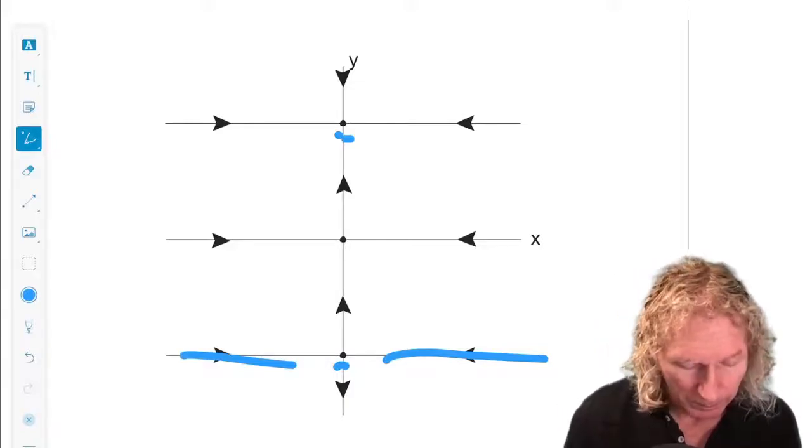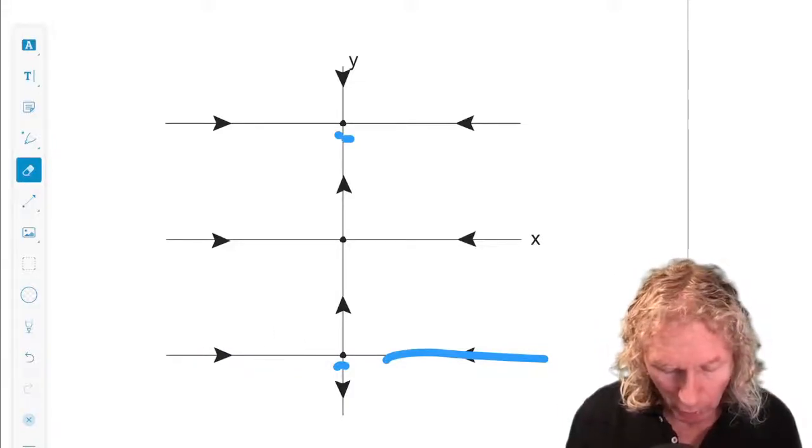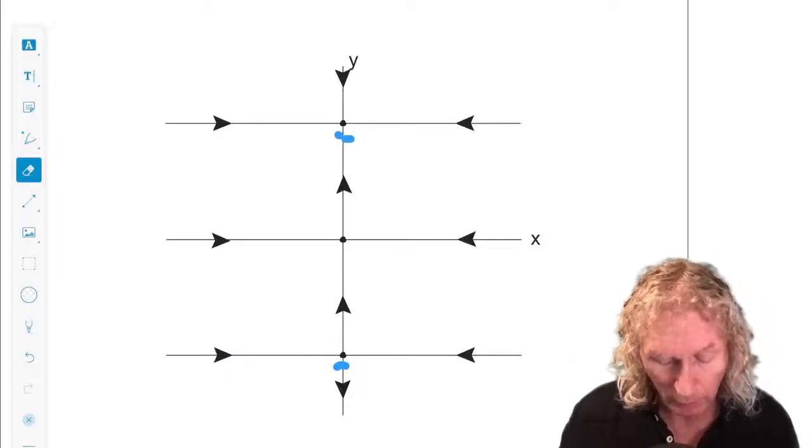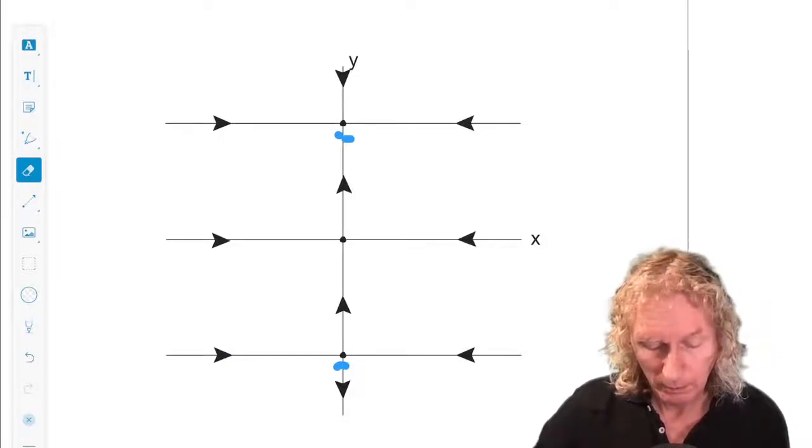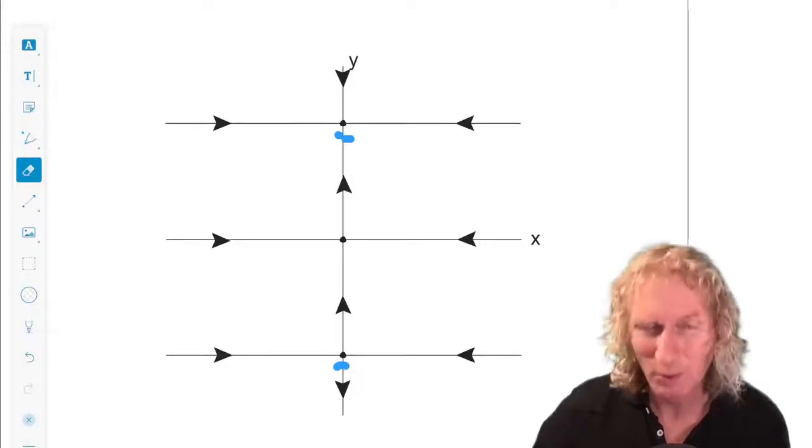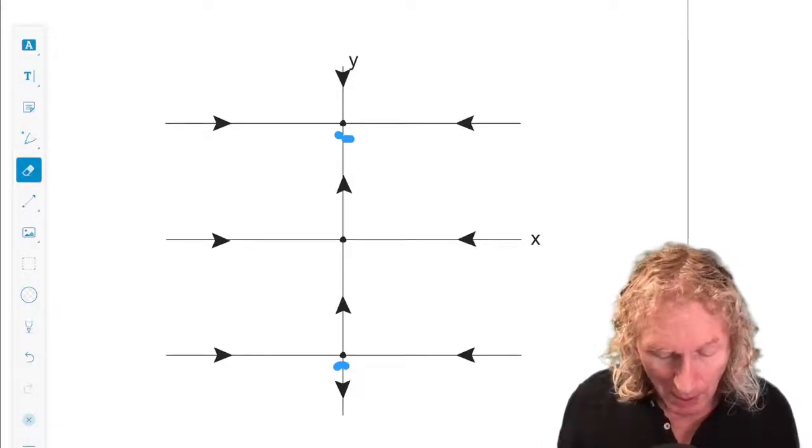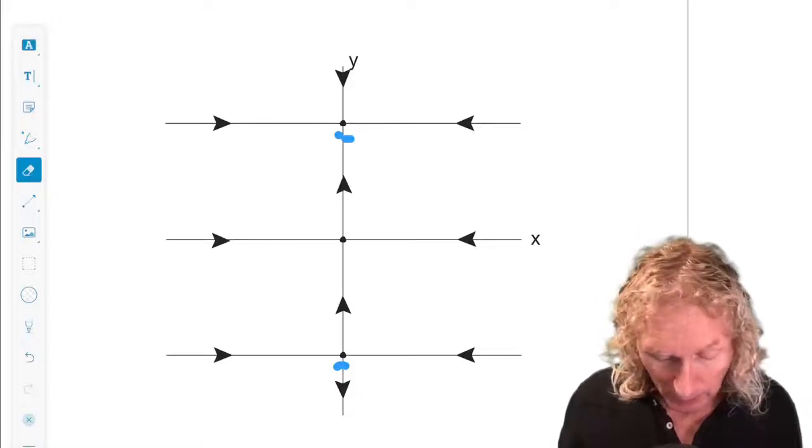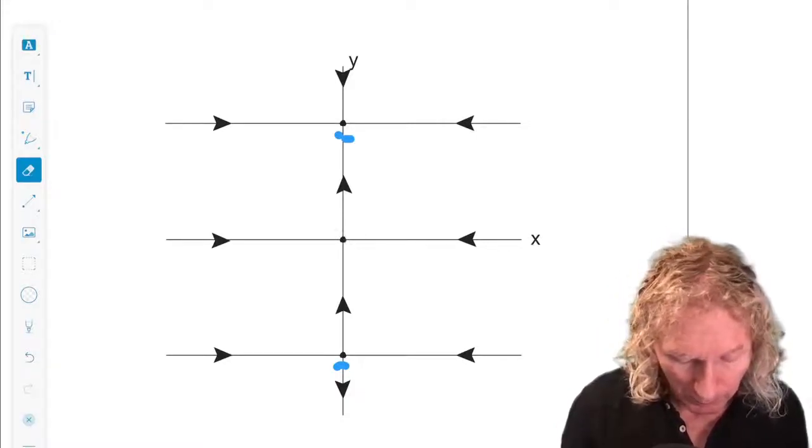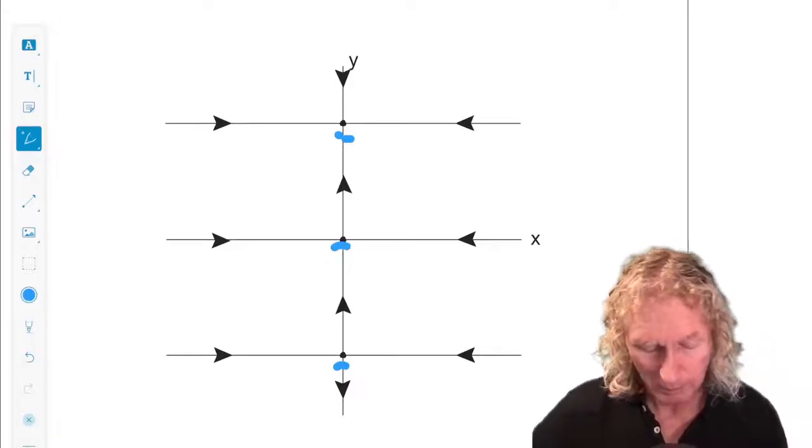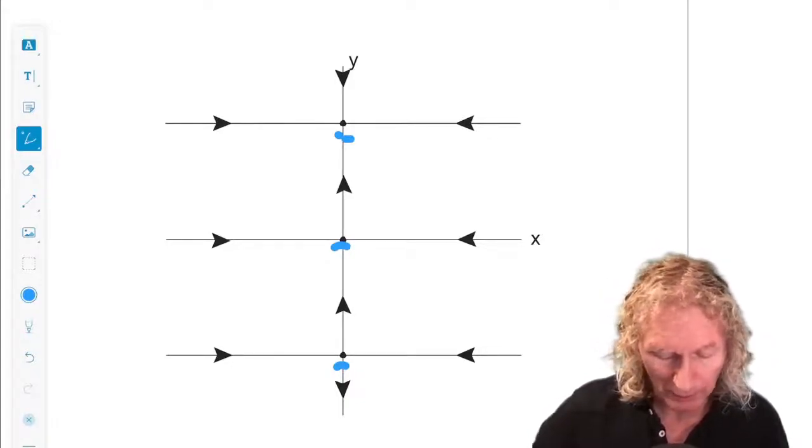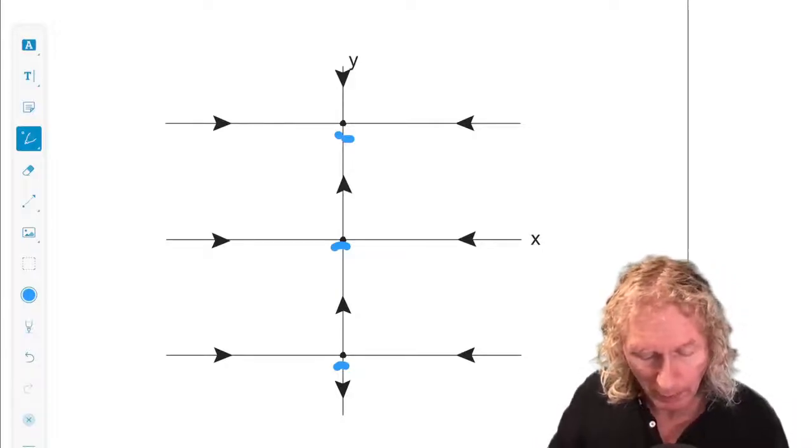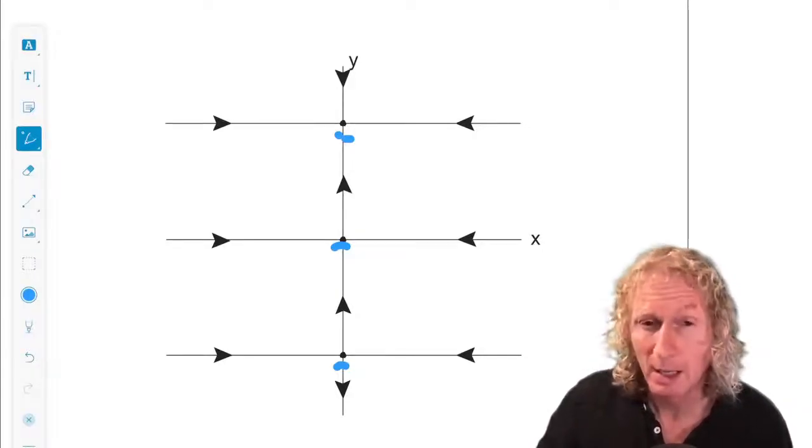And the global unstable manifold is the line from y equals minus infinity up to but not including y equals zero, because that's a fixed point. Okay. So it's a set of x, y such that x equals zero and y varies between minus infinity and zero.